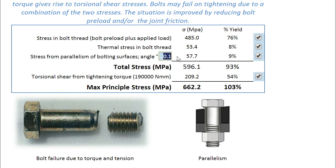Most of the time that will probably be zero, so if we pop that up to zero, that obviously reduces the stress. The total axial stress is the addition of all these terms, which gives us 84%.